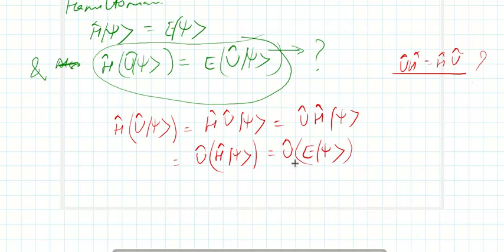This can be written in this form. E is a number, it can be taken outside, so it is E U|ψ⟩. From here I can see that these both have the same eigenvalues of energy.